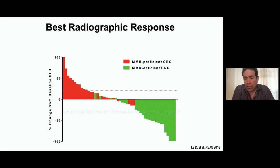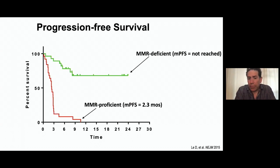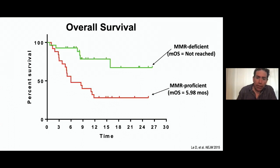Looking at radiographic responses, mismatch repair deficient tumors (green) showed majority responding, while proficient tumors (red) progressed rapidly. For progression-free survival, proficient tumors — with low mutational burden — all progressed quickly with a median PFS of 2.3 months. The deficient group has still not reached median progression-free survival. The same holds for overall survival: not reached in the mismatch repair deficient group; the proficient group reached it at 5.98 months.